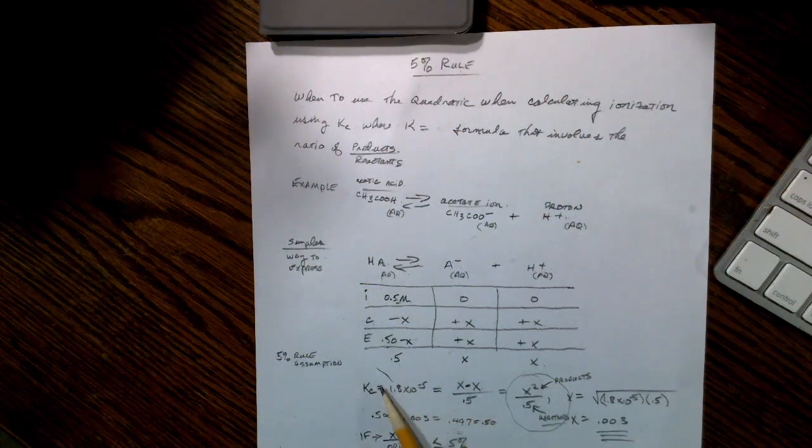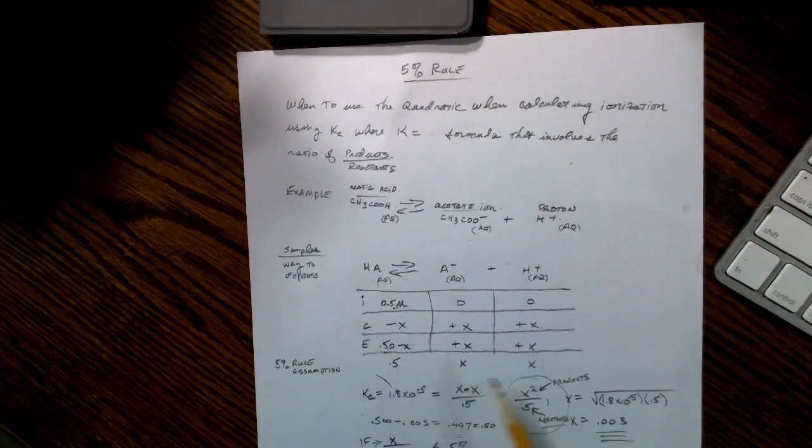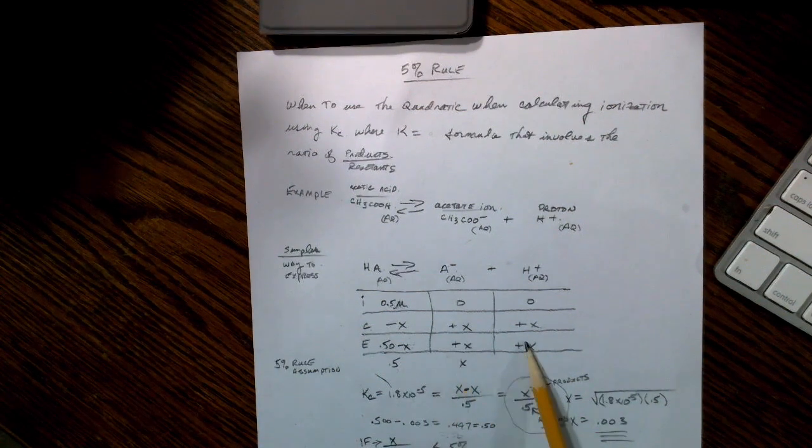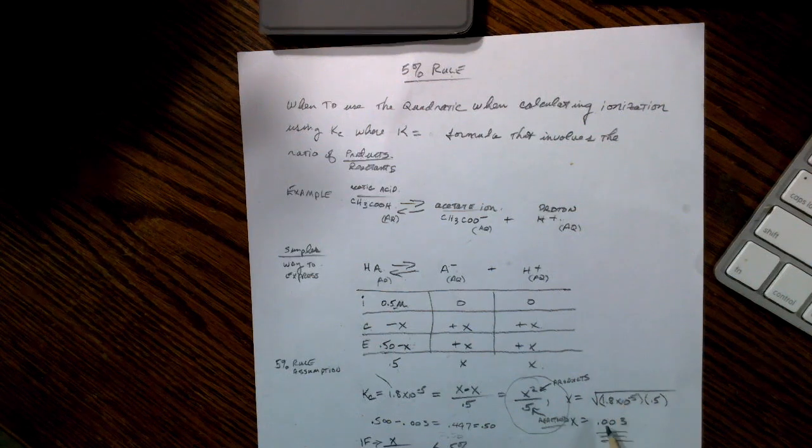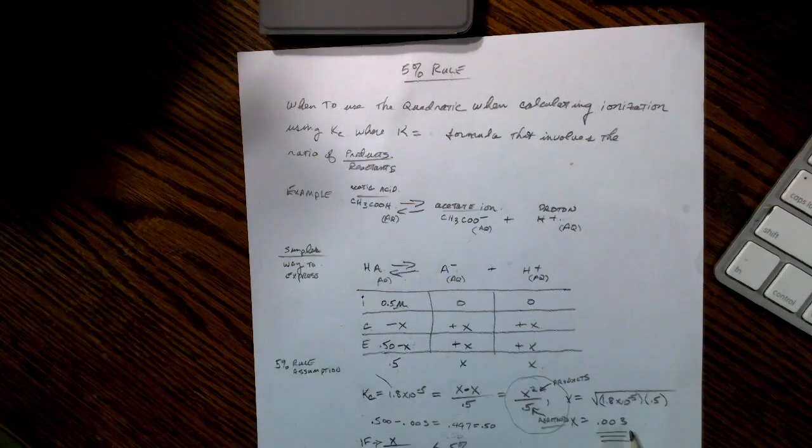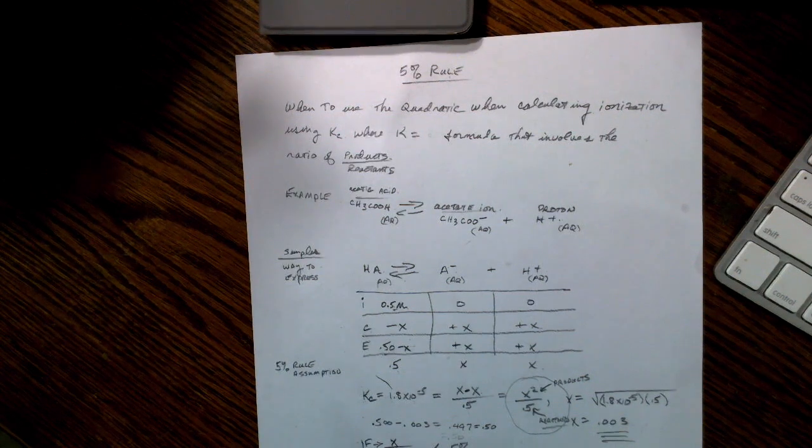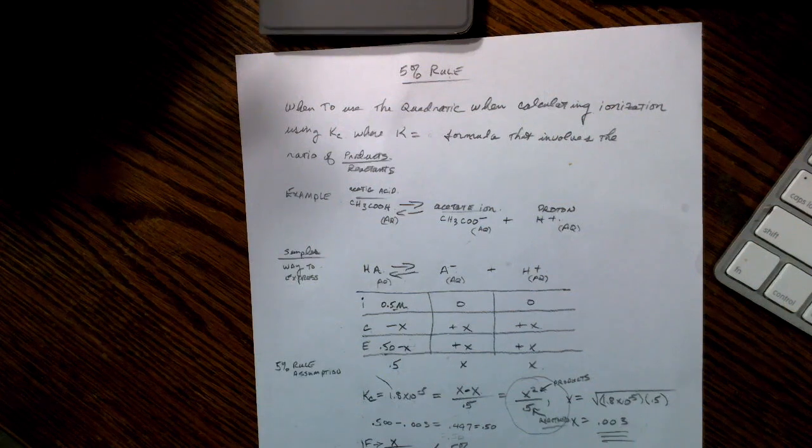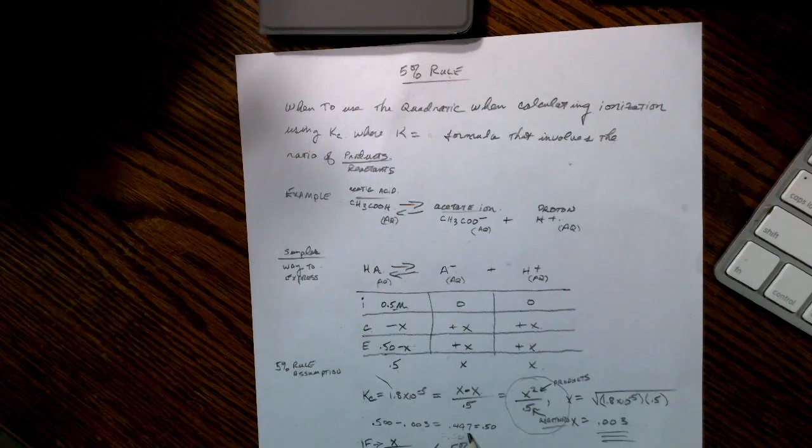You'll see that right down here. This is the 5% rule assumption. Here's the equilibrium constant for acetic acid or vinegar, it's 1.8 times 10 to the minus 5. And it's x times x divided by 0.5. This is the x times x. So x times x is x squared, and it's divided by 0.5. If we solve that equation, we wind up with x equals 0.003. That's not a percent, that's a number. If we take 0.003 and subtract it from 0.500, we wind up with 0.497.